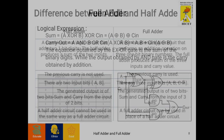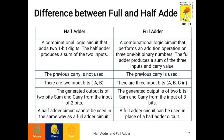Now let's see the difference between full adder and half adder. A half adder is a combinational circuit that performs the addition of 2 bits, whereas a full adder is a combinational circuit that performs the addition of 3 bits. A half adder adds two 1-bit digits.